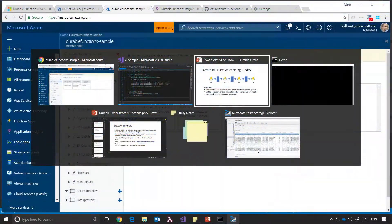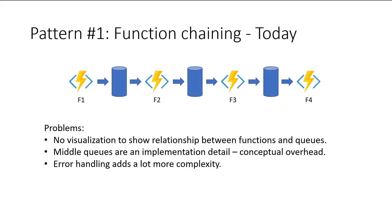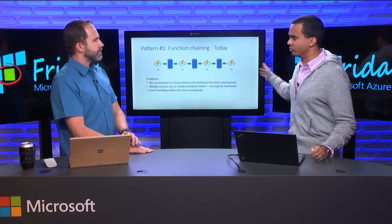One thing I like to do when showing people good use cases is use pictures. One pattern that we advertise is function chaining. Let's say you want to write a function app where you have some function F1, it does some work, and then it needs to call another function F2 — you have some multi-step process you want to automate. Today, maybe you provision some queue, F1 drops a message into a queue, and that triggers F2. It does its work, drops a message, and so on.